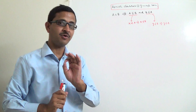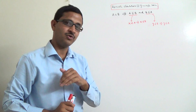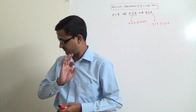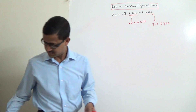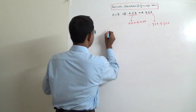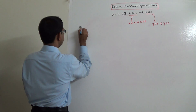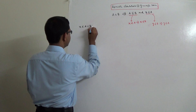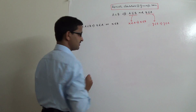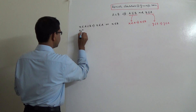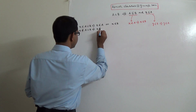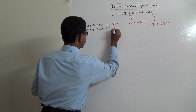Now, a few important formulas I want to revisit. If X belongs to A union B, that implies X belongs to A or X belongs to B. But if X does not belong to A union B, that means X doesn't belong to A and X doesn't belong to B. The word 'or' is used for union membership, and 'and' is used when an element does not belong to a union.